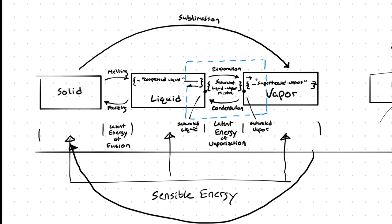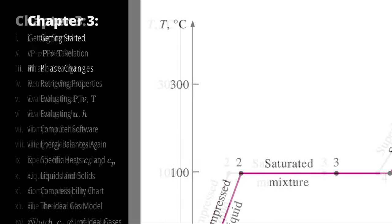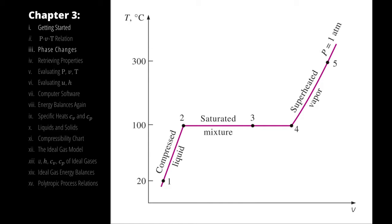If we start by looking at the temperature and volume of water specifically, we have a relationship that looks like this. If you increase the energy of water at a constant pressure, you are increasing the temperature, which is also increasing the specific volume. This trend continues until the water is saturated with energy, at which point it changes phase. During the phase transition process, the temperature remains the same but the specific volume increases. Once it has increased enough to change the phase, it becomes a vapor and you can increase the temperature again.